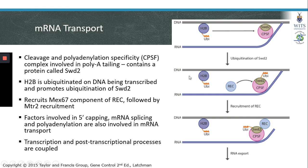Therefore, modification of the DNA being transcribed can impact the mRNA and facilitate its transport into the cytoplasm. REC recruitment promotes export of this mRNA into the cytoplasm. Overall, factors involved in 5' capping, mRNA splicing, and polyadenylation are also involved in mRNA transport. This tells us that transcription and post-transcriptional processes are coupled, because proteins involved in post-transcriptional modification of an mRNA also promote export of this RNA into the cytoplasm.